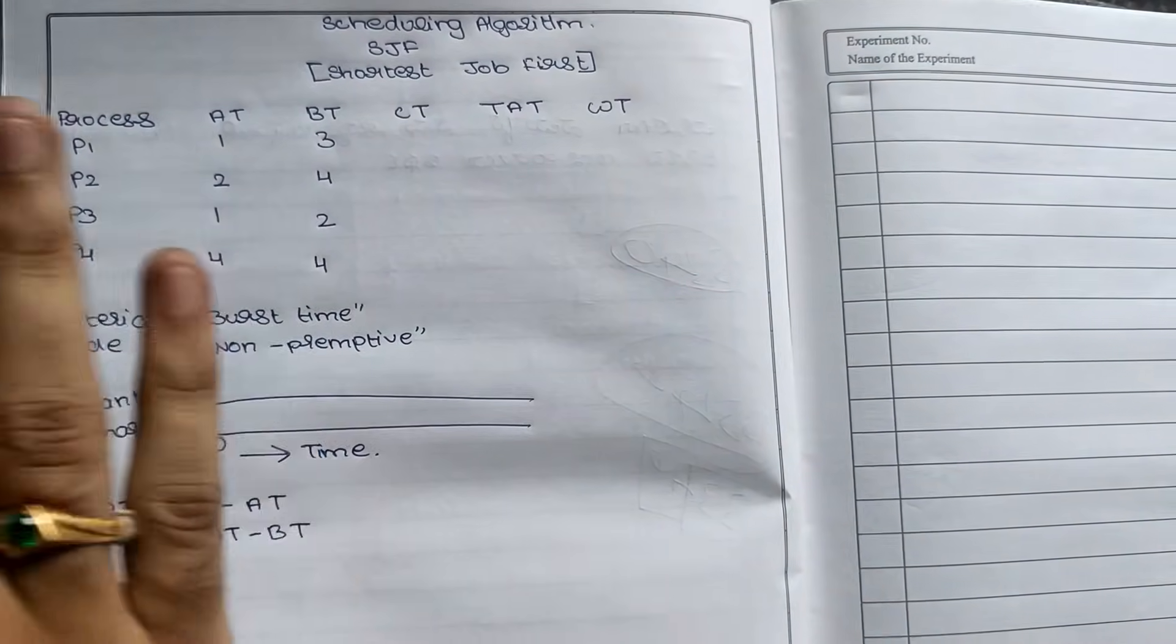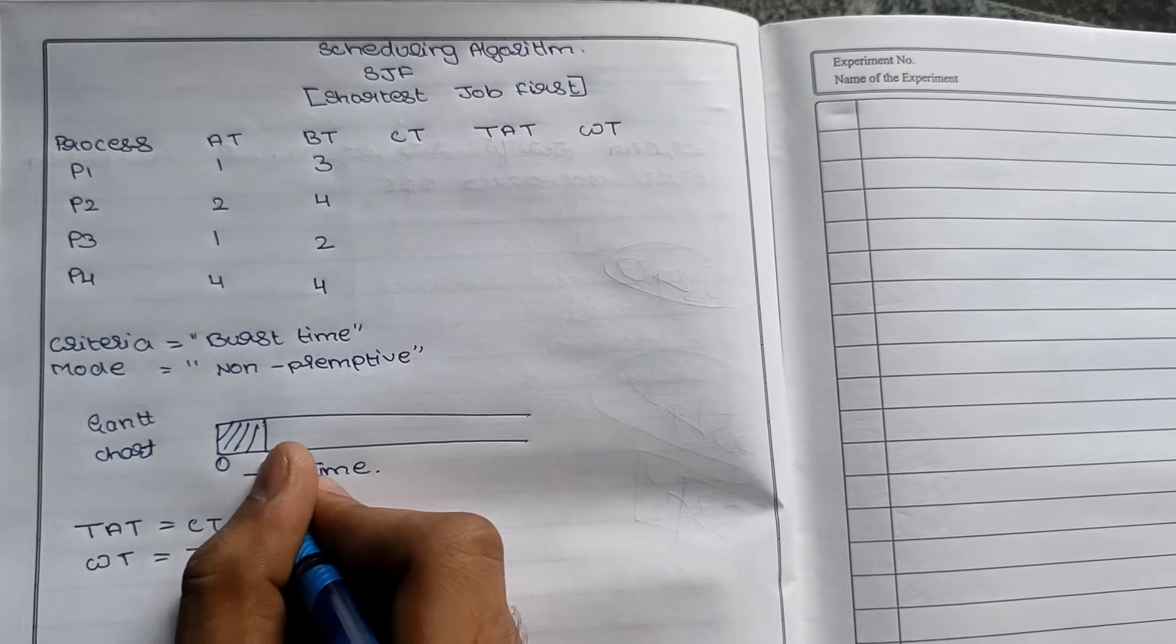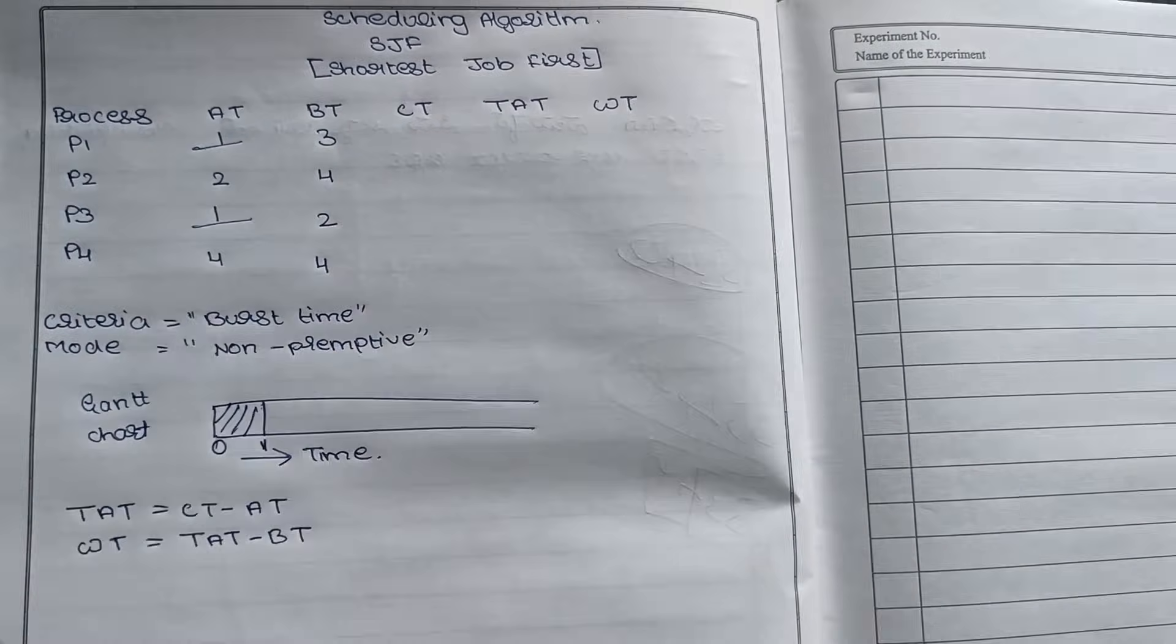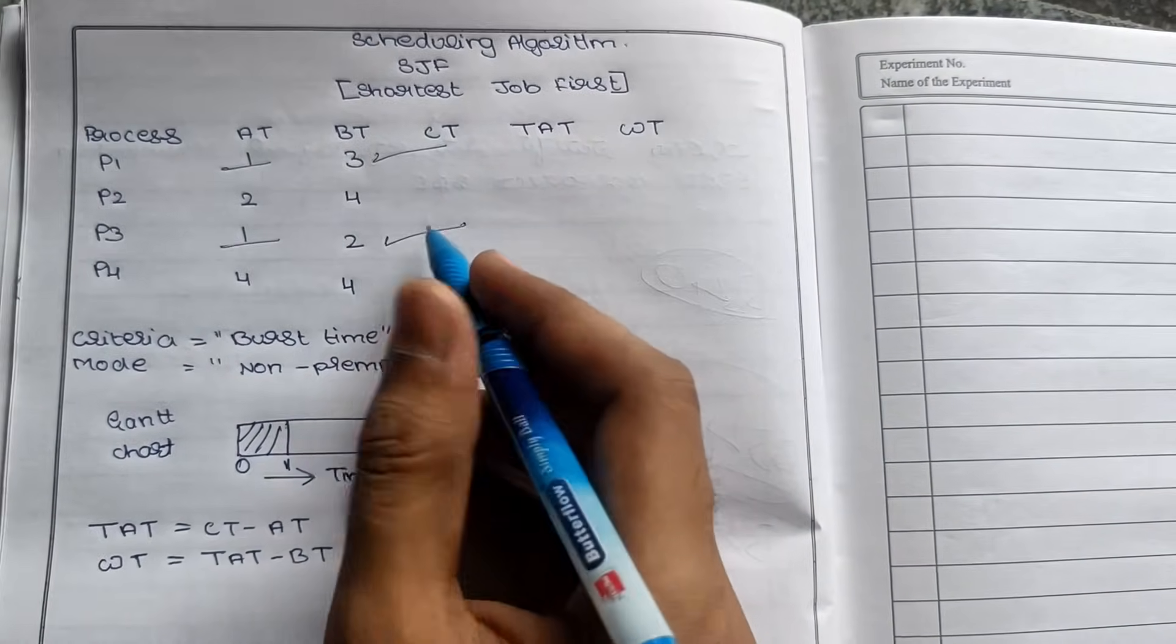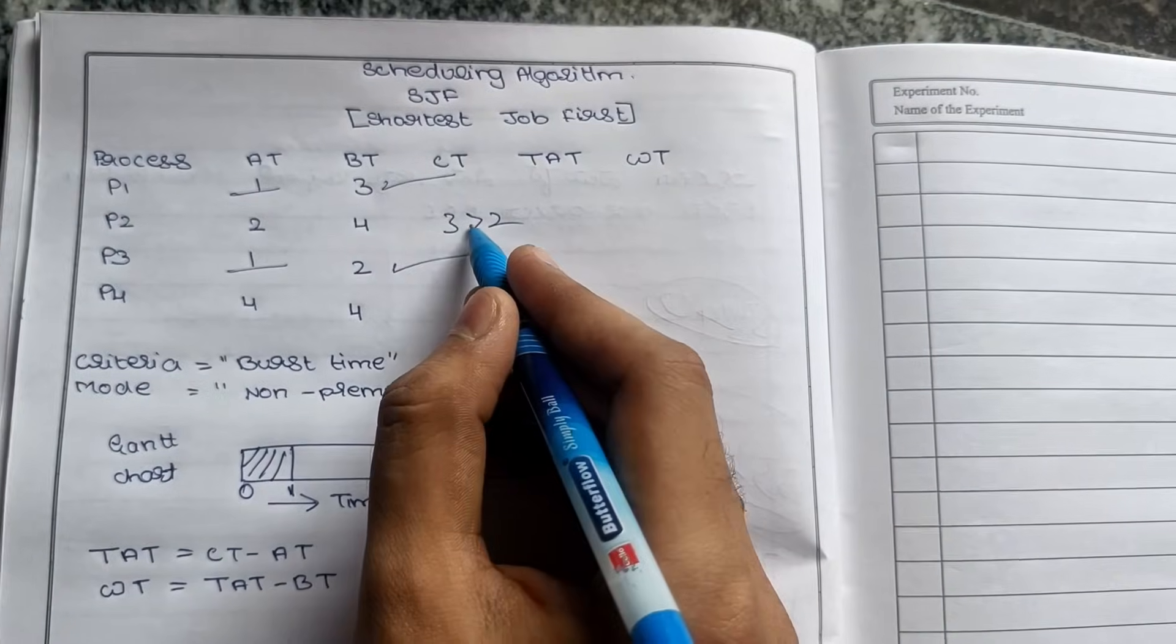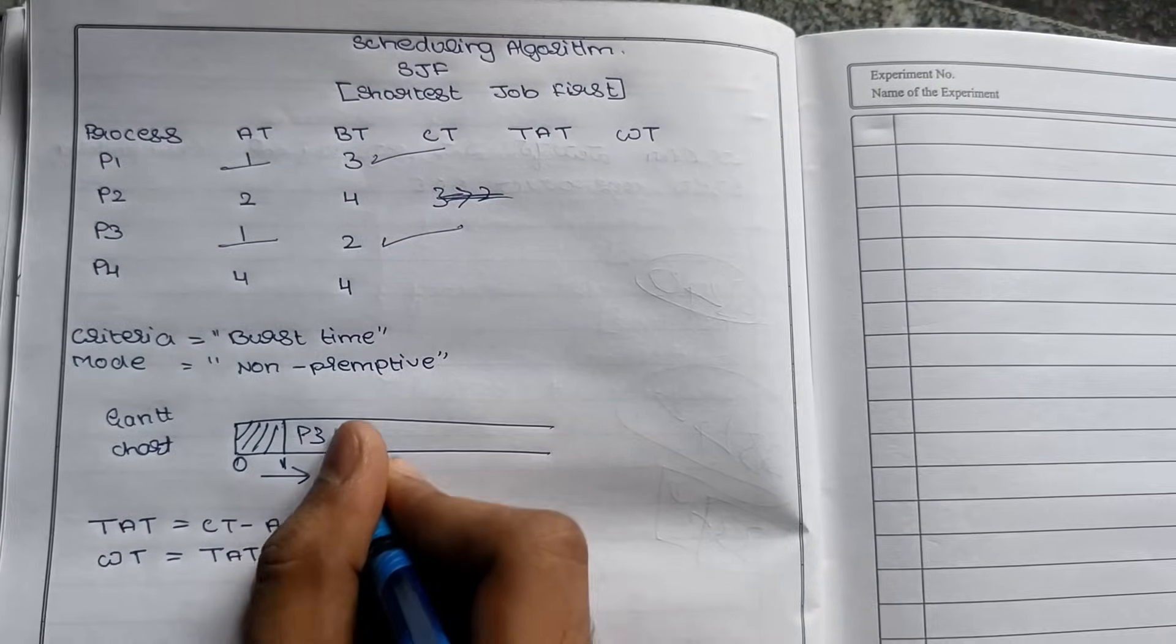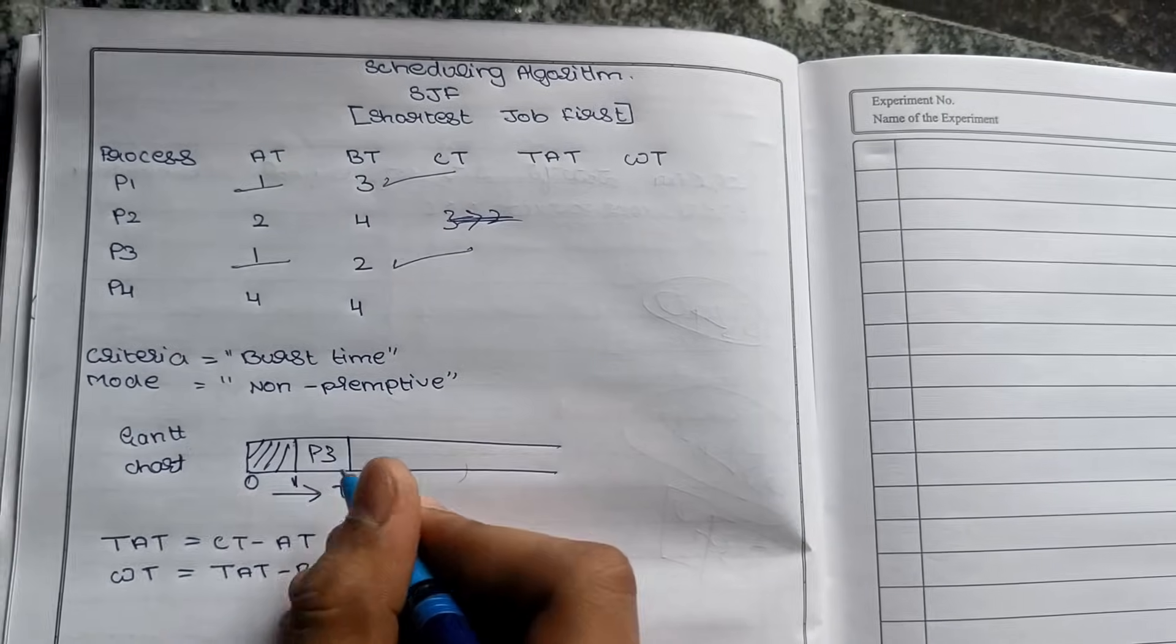We look at arrival time and see process 1 has arrival time 0, so we start there with no ideal time. Next, arrival times 1, 2, and 3 come. We look at burst time to see which process finishes first. Between P1 and P3, we compare burst times. P3 has burst time 2 which is less, so we assign P3. As I told, it's non-preemptive, so we complete everything.